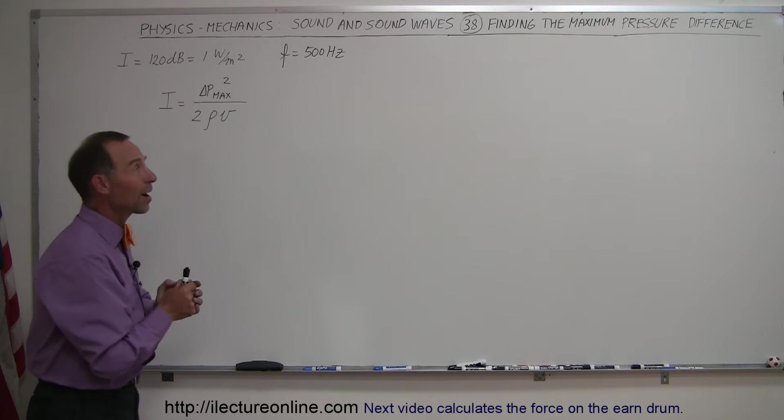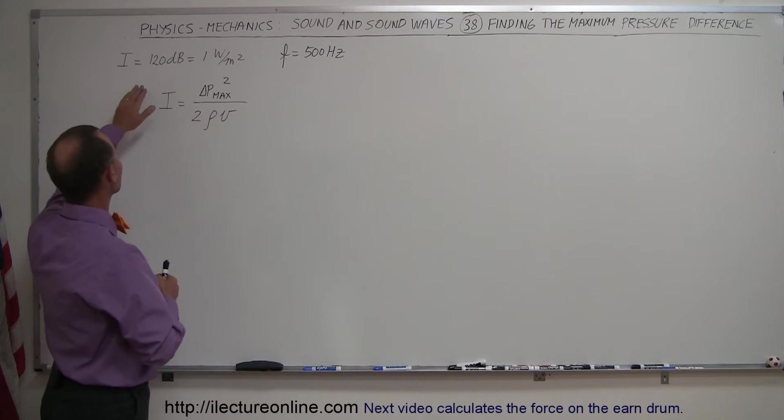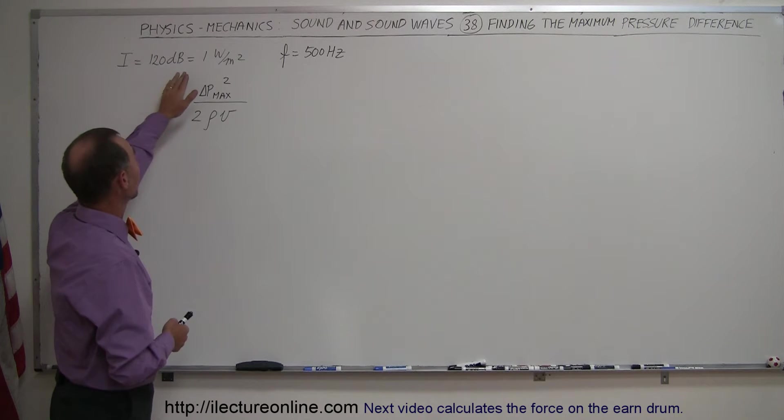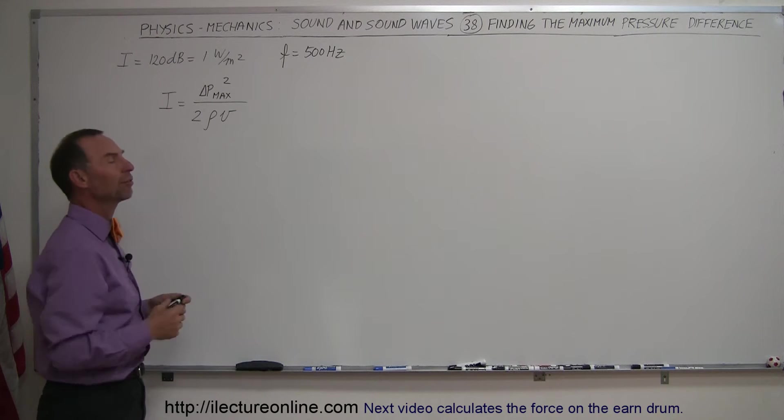In this video, we're going to find the maximum pressure difference in a loud sound, like 120 decibels, which is the sound intensity of 1 watt per square meter at a frequency of 500 hertz.